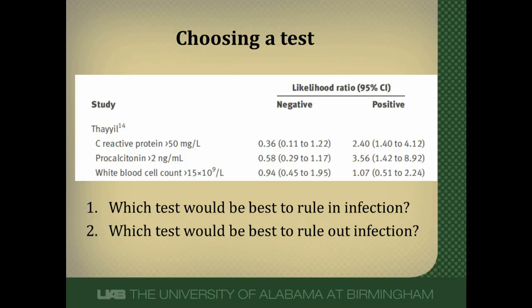To rule in infection, we want to choose the test with the highest positive likelihood ratio. Procalcitonin has the highest positive likelihood ratio and will increase our post-test probability the most. So if our goal is to rule in an infection, we should choose procalcitonin if we're only going to do one test. To rule out infection, we want the lowest negative likelihood ratio, and that's C-reactive protein. If our pretest probability was low and our goal was to rule out infection, we should choose C-reactive protein.